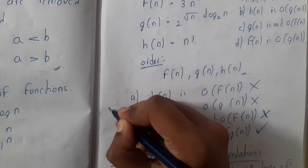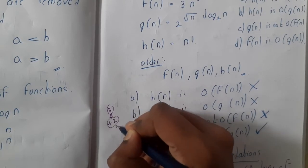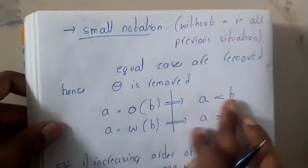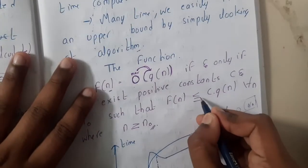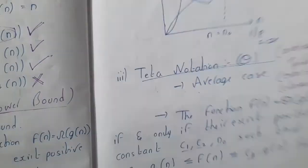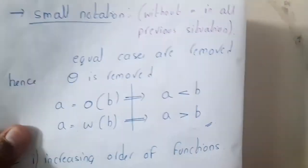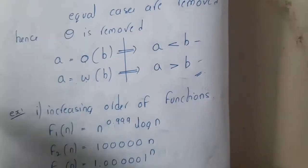Along with these three important notations, there are two additional small notations. The simple difference is that small notations do not have the equal-to part. In Big O and Omega we have less-than-or-equal-to; small o and small omega use strictly less than — strictly greater than conditions only.